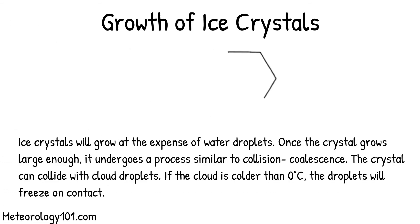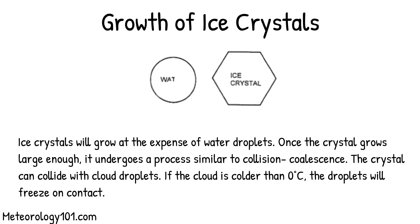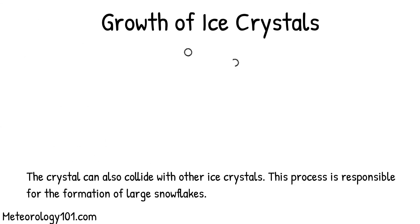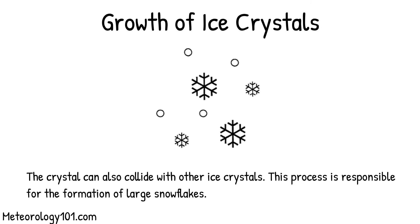Ice crystals will grow at the expense of water droplets. Once the crystal grows large enough, it undergoes a process similar to collision coalescence. The crystal can collide with cloud droplets, and if the cloud is colder than 0 degrees Celsius, the droplets will freeze on contact. The crystal can also collide with other ice crystals. This process is responsible for the formation of large snowflakes.